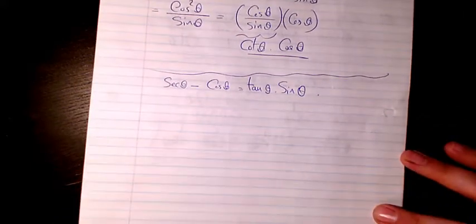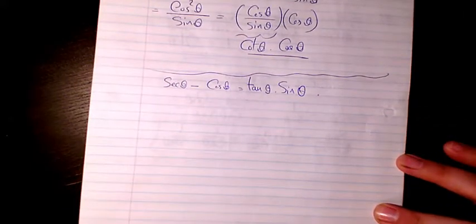So here in this example, I have secant theta minus cosine theta equals tan theta times sine theta.